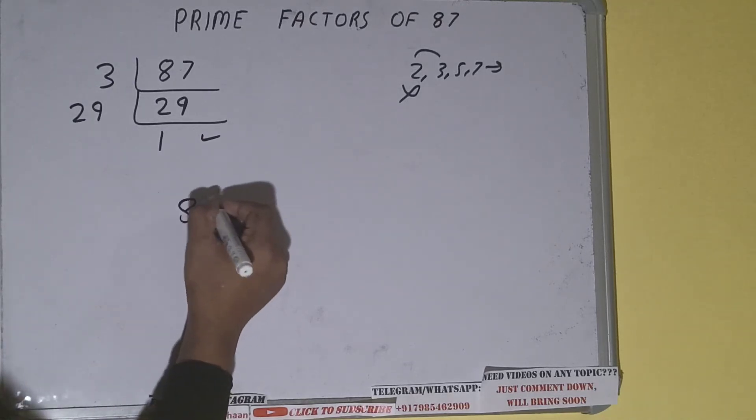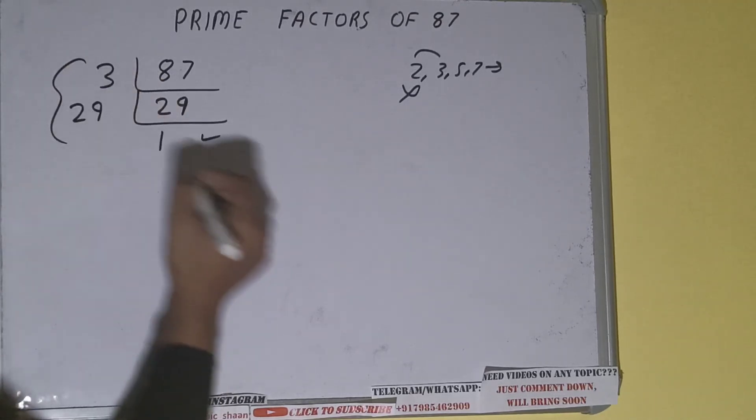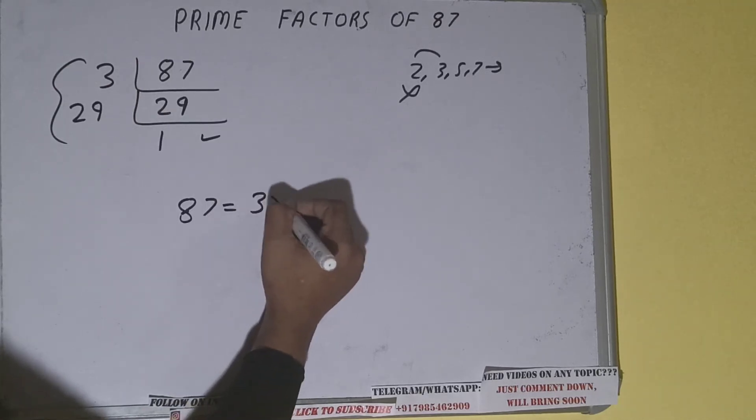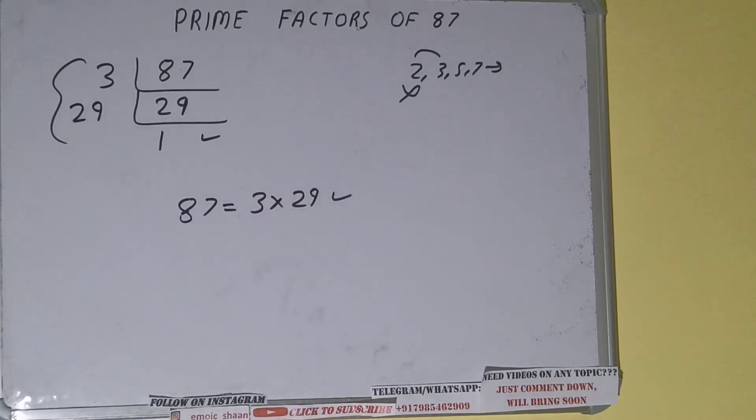...one last thing. That is, prime factors of 87 will be whatever we have on the left-hand side, that is 3 times 29. That would be the answer. So this is all about prime factors of 87.